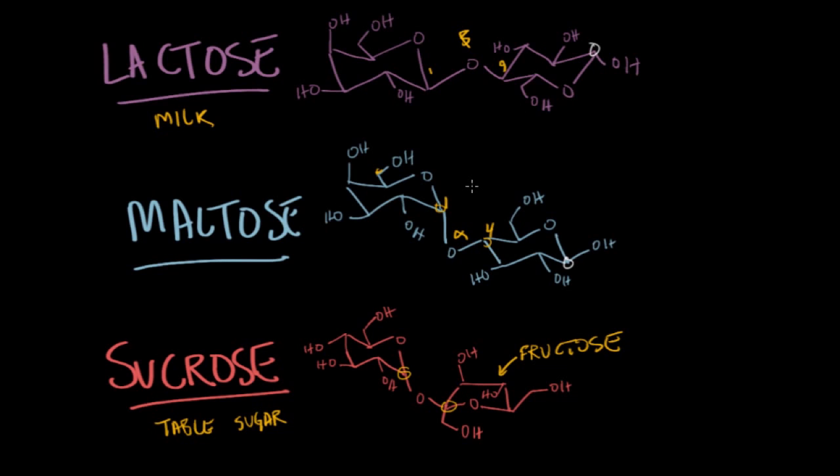That's different than maltose and lactose. Right here is the anomeric carbon of both maltose and lactose. That's the C4 that's bound. So these are both linked together by their anomeric carbons.